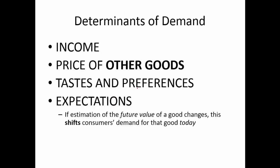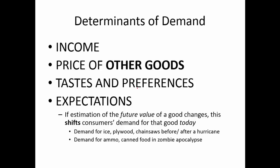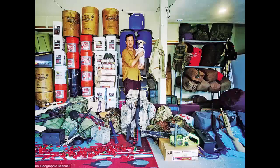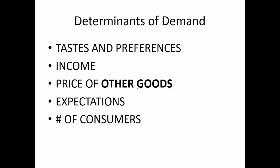Next is expectations. If the estimated future value of a good changes, that shifts demand for the product today. It's a pretty observable phenomenon — before, during, and after hurricanes, you see shifts in demand for items that become extremely useful both in preparing for a storm and cleaning up after one. Another example: demand for ammo and canned food if people are expecting a zombie apocalypse. If you really are expecting one, you know those goods will be scarce and hard to come by, so you stock up now. Finally, the number of consumers is straightforward — if a population grows, demand for products grows along with it.